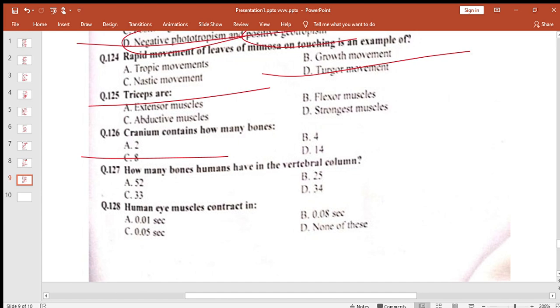How many bones humans have in the vertebral column? In vertebral column, we have 26 bones. But if we have 33, then we have 33 bones. How many bones humans have in the vertebral column? 33 bones.